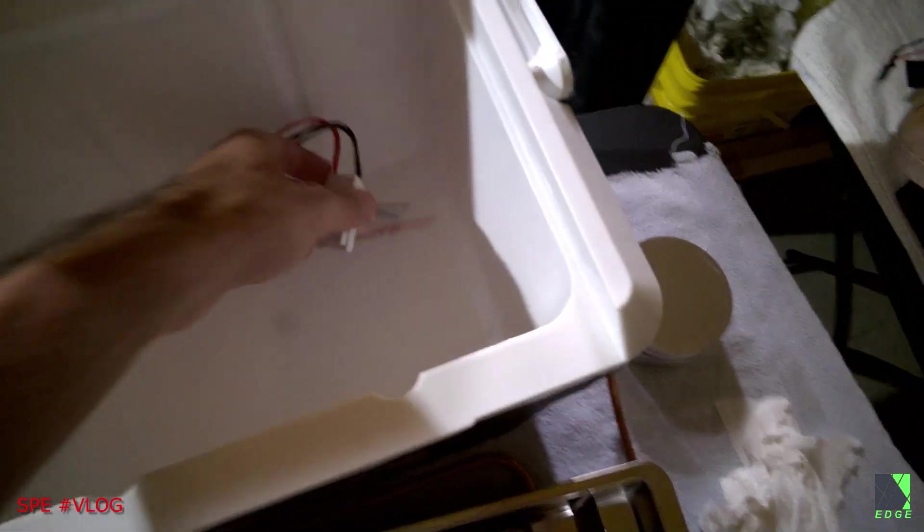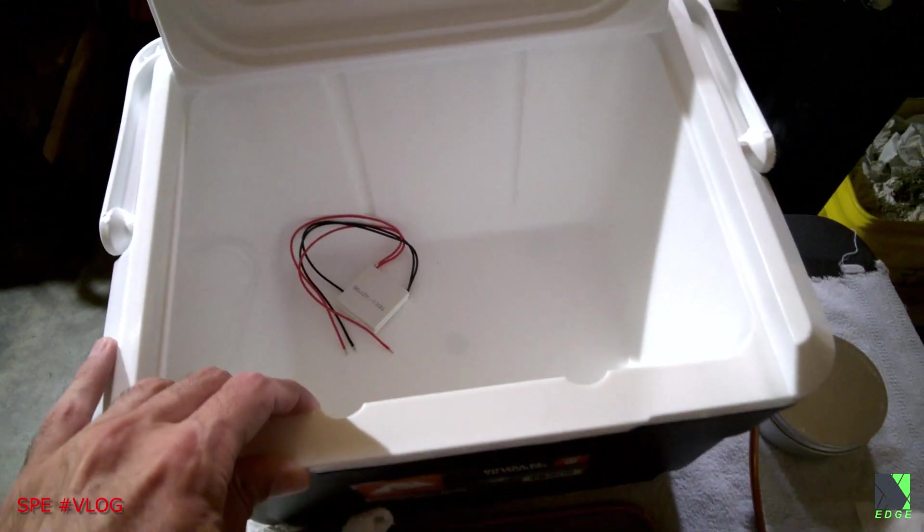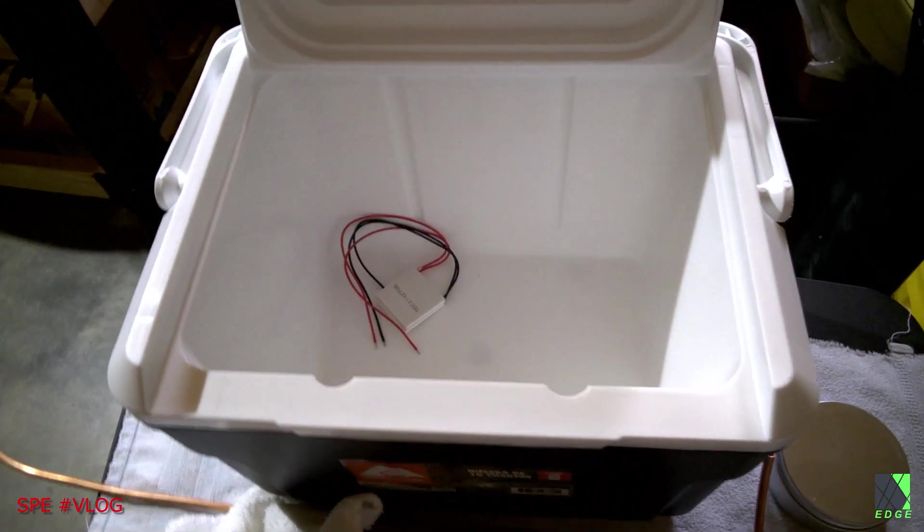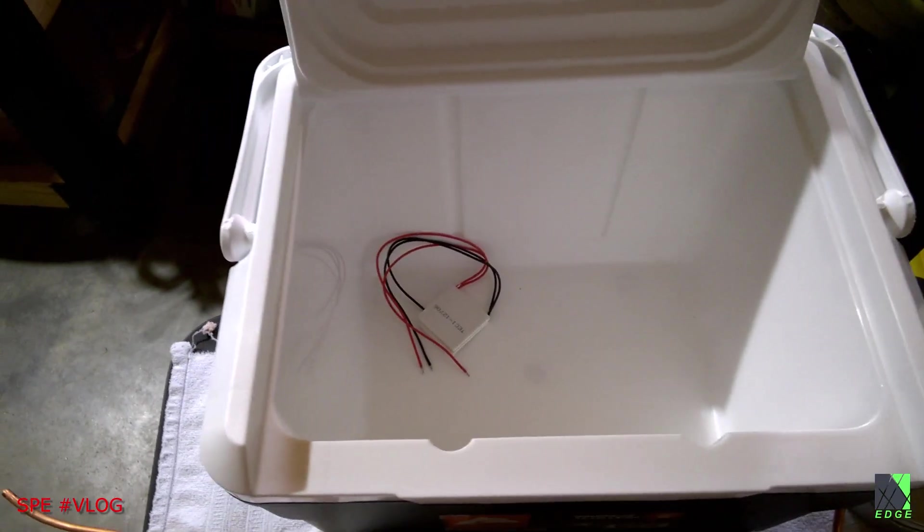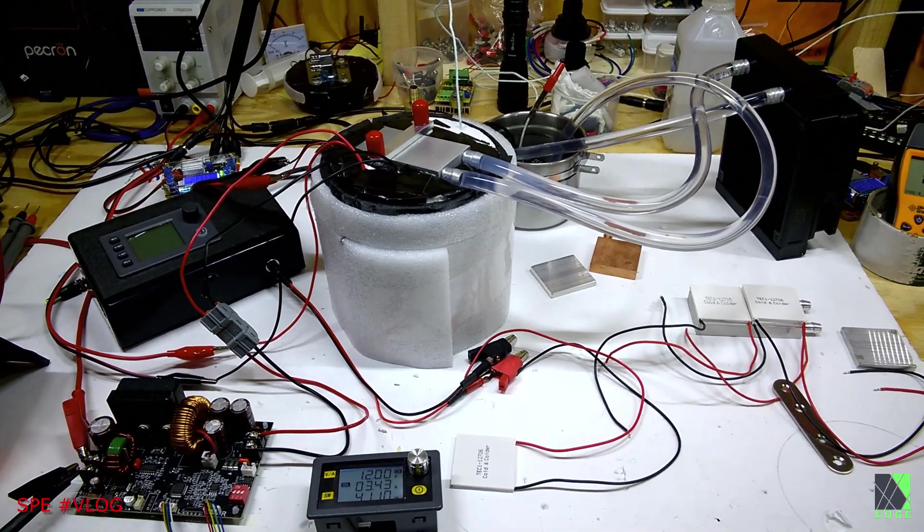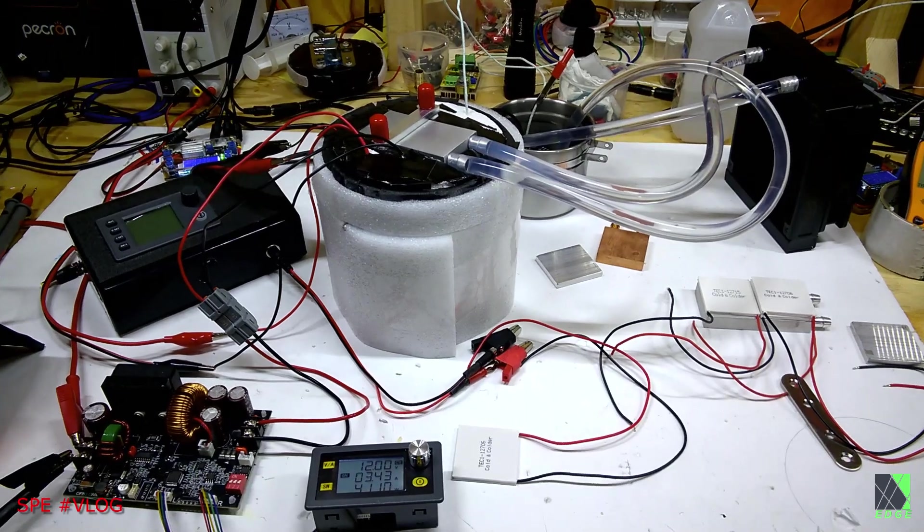I'm going to be using Peltier modules to do the cooling. There's going to be probably water cooling for the hot side of the Peltier. Maybe I can put that on here somewhere. I don't know exactly how I'm going to attach it. This freezer is using about 49.2 watts, which is less than what the other freezer was using, and yet it works a lot better.